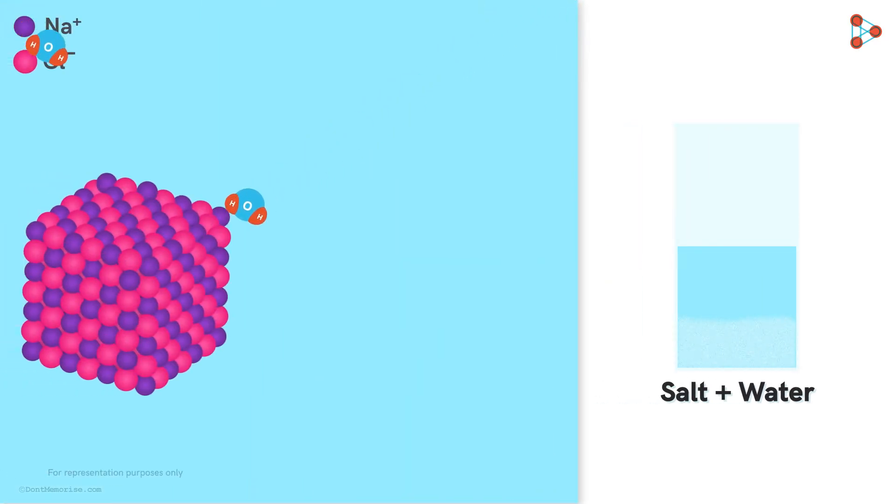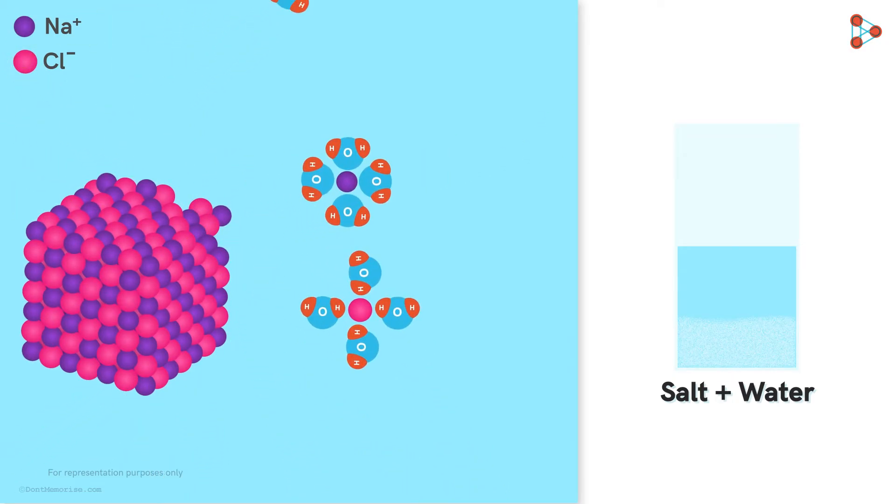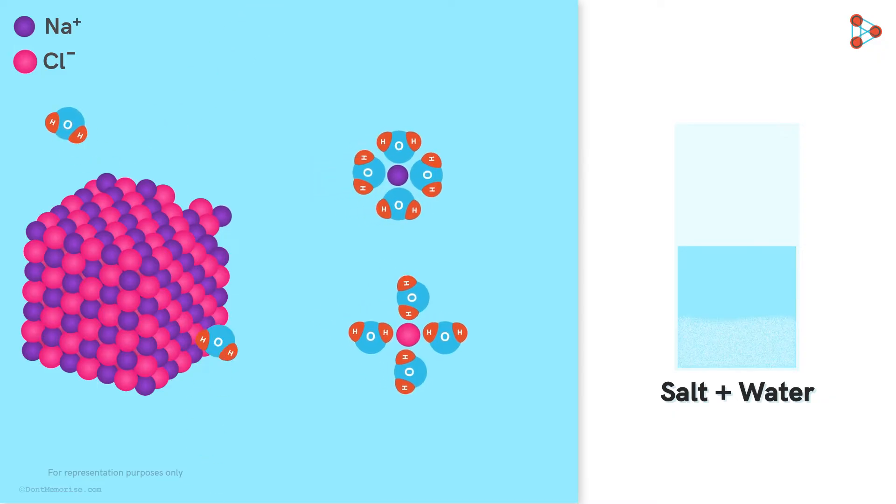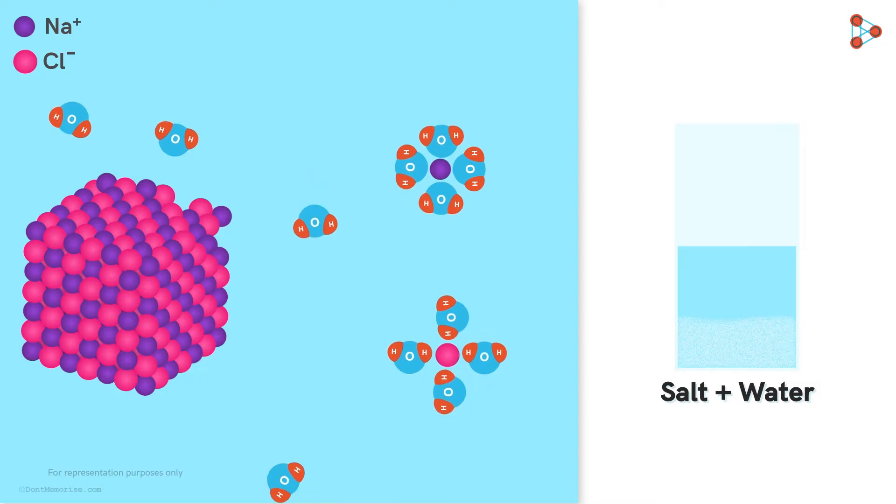The water molecules collide with the crystal until an ion breaks free. Since the ions are positively or negatively charged, and the water molecules are polar, more water molecules are attracted towards that ion, and they cluster around it.